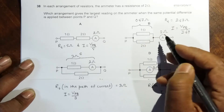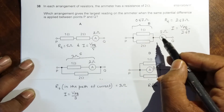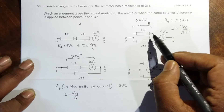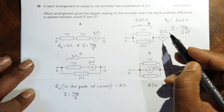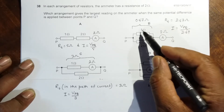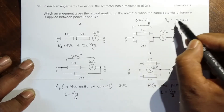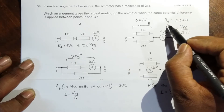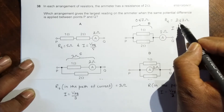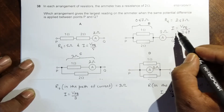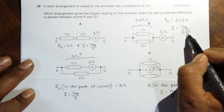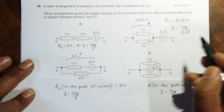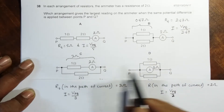In the second figure, we have a parallel arrangement of 1 ohm and 2 ohm, whose combined resistance is 0.67 ohms. When this is added to the series 2 ohm, the total resistance will be equal to 2.67 ohms, and the current will be VPQ divided by 2.67.